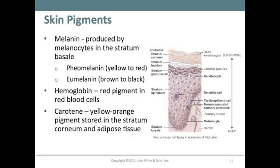Melanin is related to skin pigments and coloration. It is produced by melanocytes in the stratum basal. Pheomelanin is yellow to red, and eumelanin is brown to black. Hemoglobin is the red pigment in blood cells, and carotene is a yellow to orange pigment stored in the stratum corneum and adipose tissue.